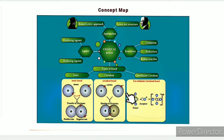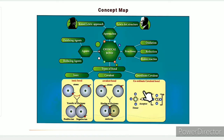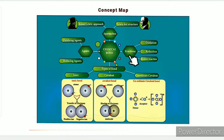In this lesson, there are a total of 4 topics. The 1st topic is Kossel and Lewis's approach to chemical bonding. The 2nd topic is Lewis dot structure. The 3rd topic is types of bonds — strong bond and weak bond, including covalent bond. The 4th topic is reactions.